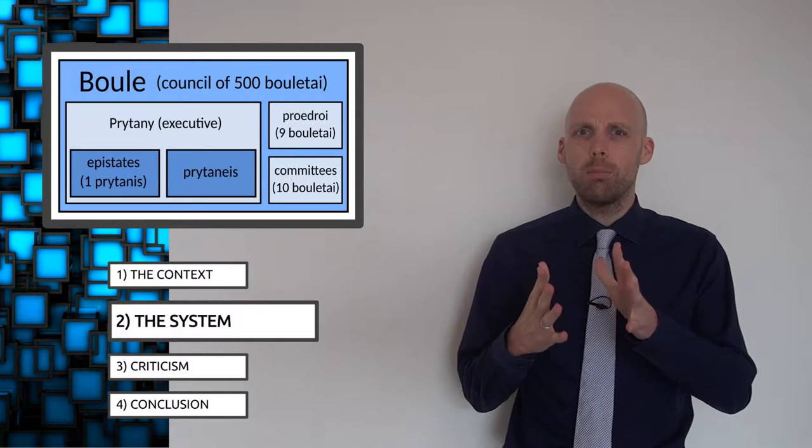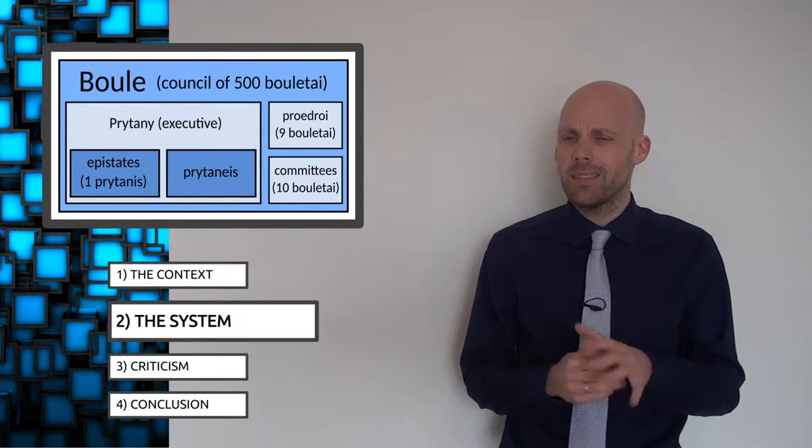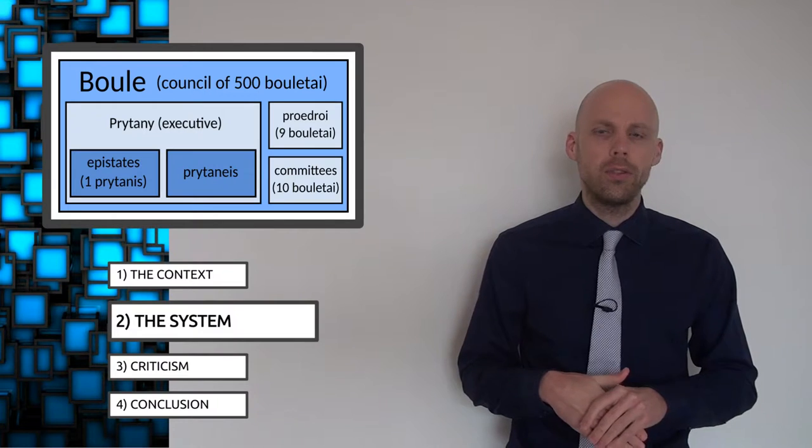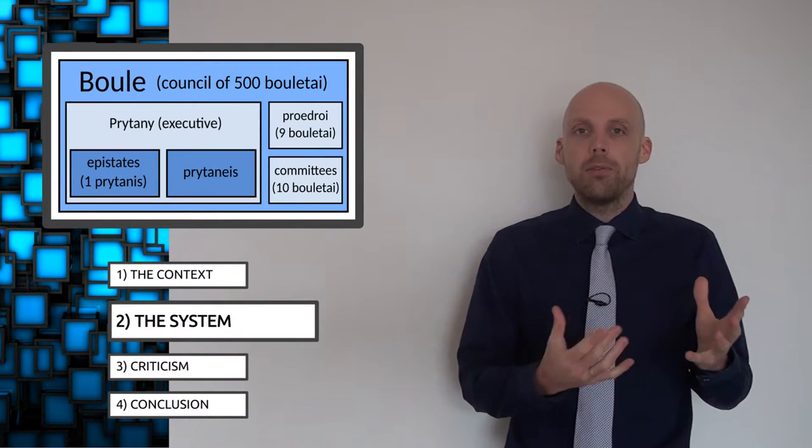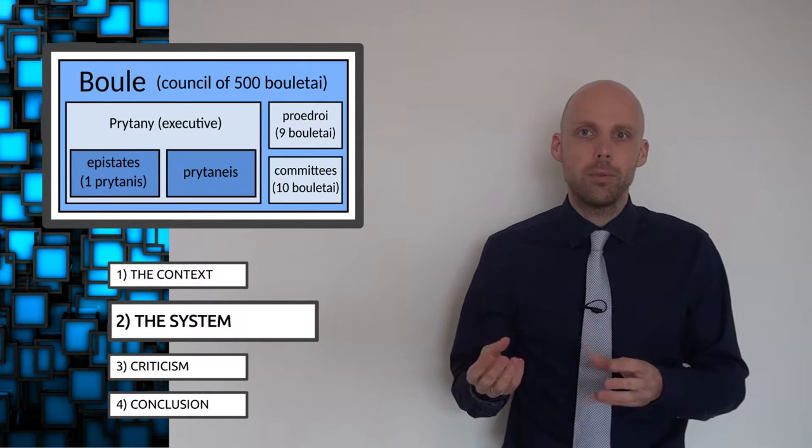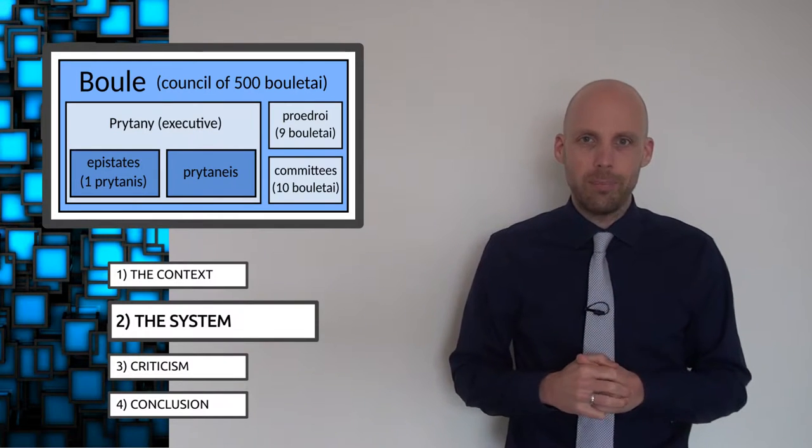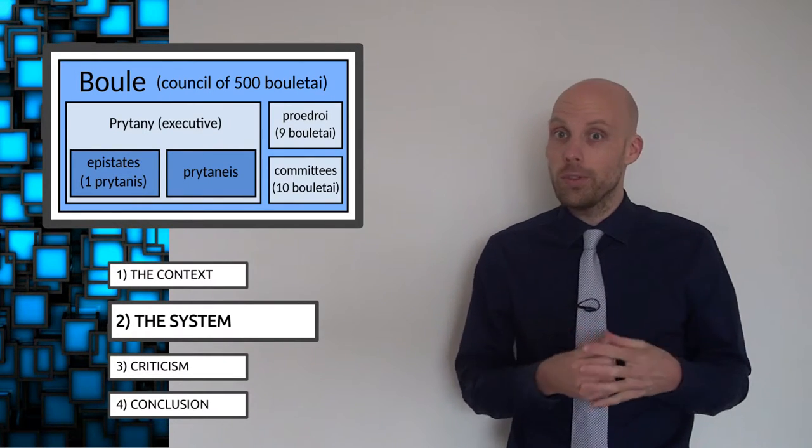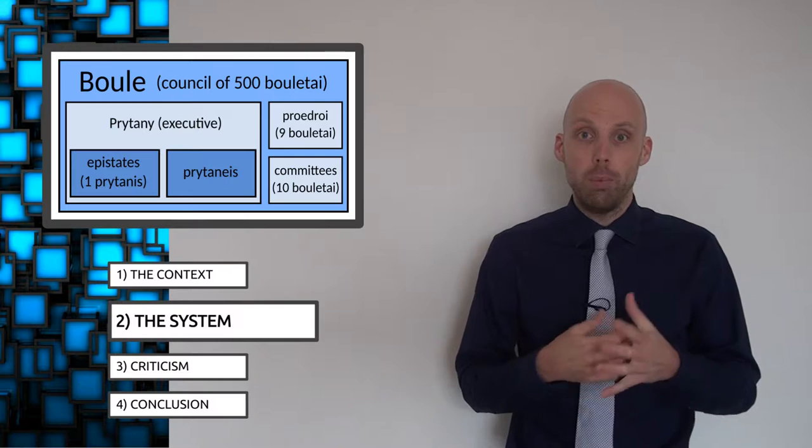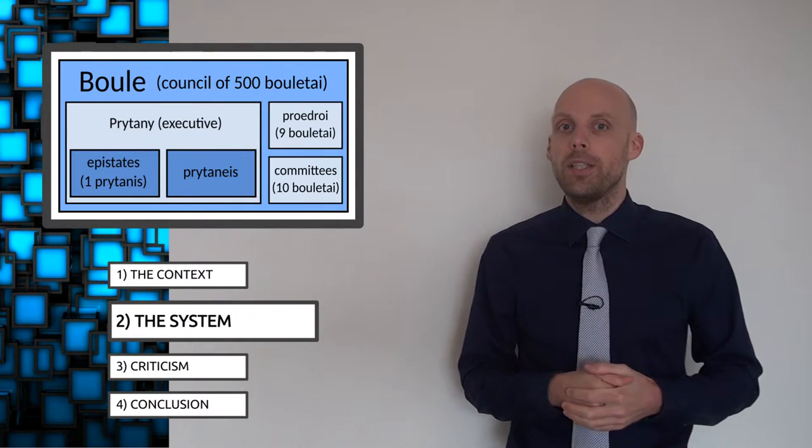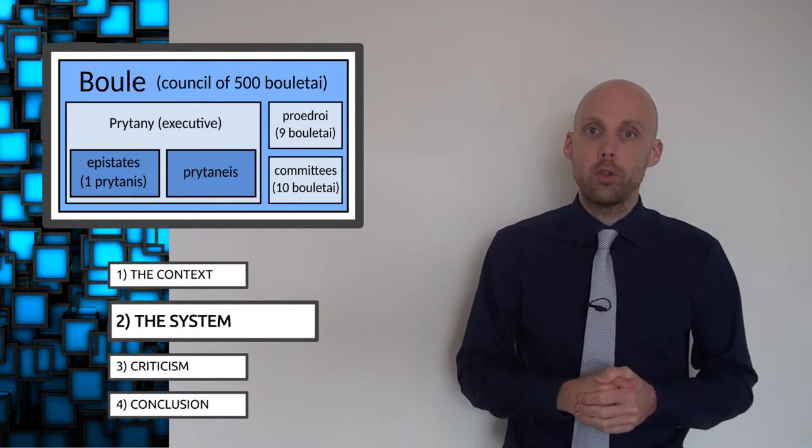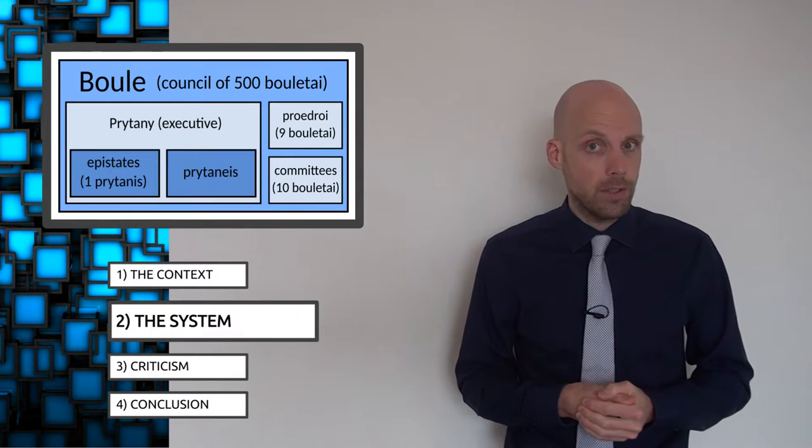Now, when I say the boule was the executive arm of government, that's a bit of a misnomer. Its functions were a combination of the executive and the civil service with just a touch of bureaucracy. It was a council of 500 citizens who were chosen to serve by lot and who had to be at least 30 years old to be eligible. Terms lasted one year and you could only serve twice in a lifetime, unconsecutively.